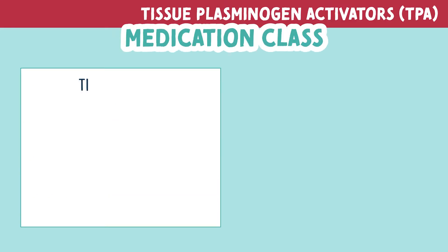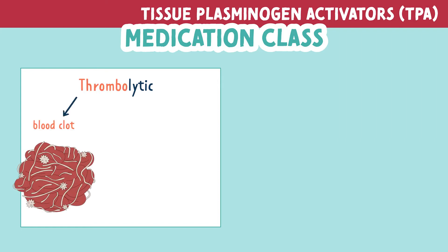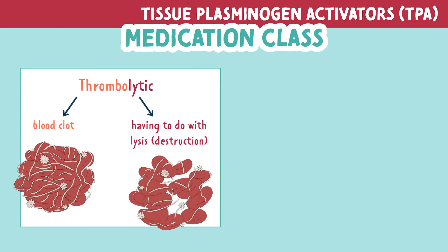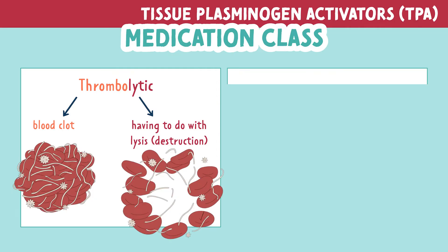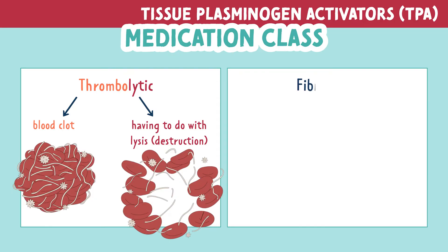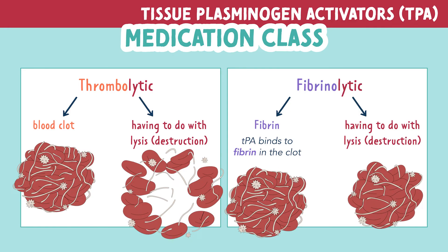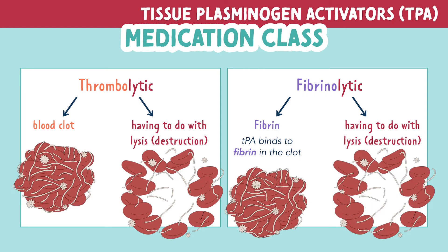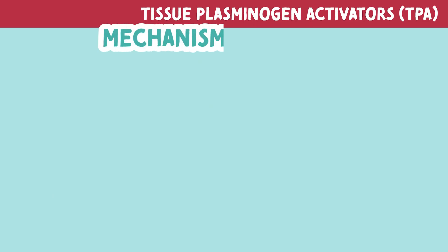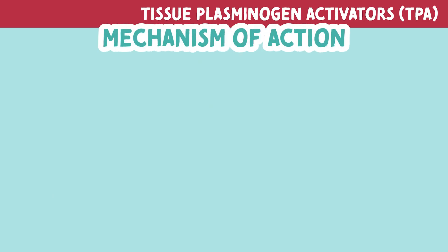TPA is a thrombolytic drug. 'Thrombo' refers to a blood clot and 'lytic' has to do with lysis or destruction. You may also hear TPAs referred to as fibrinolytics. 'Fibrino' refers to fibrin, because TPA binds to fibrin in the clot, and again 'lytic' means lysis or destruction. So this medication breaks up blood clots that are occluding vessels — but how?